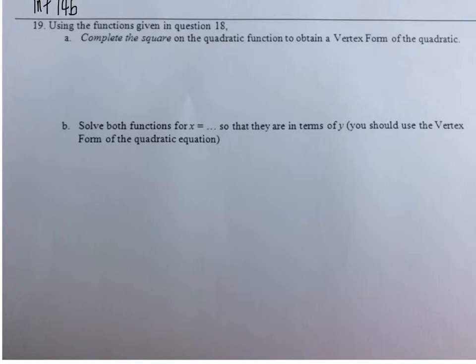We want to, in 19a, complete the square on the quadratic function. So let me rewrite the quadratic function from number 18. It was y equals negative x squared plus 2x plus 3. So we want to get a vertex form of this quadratic.